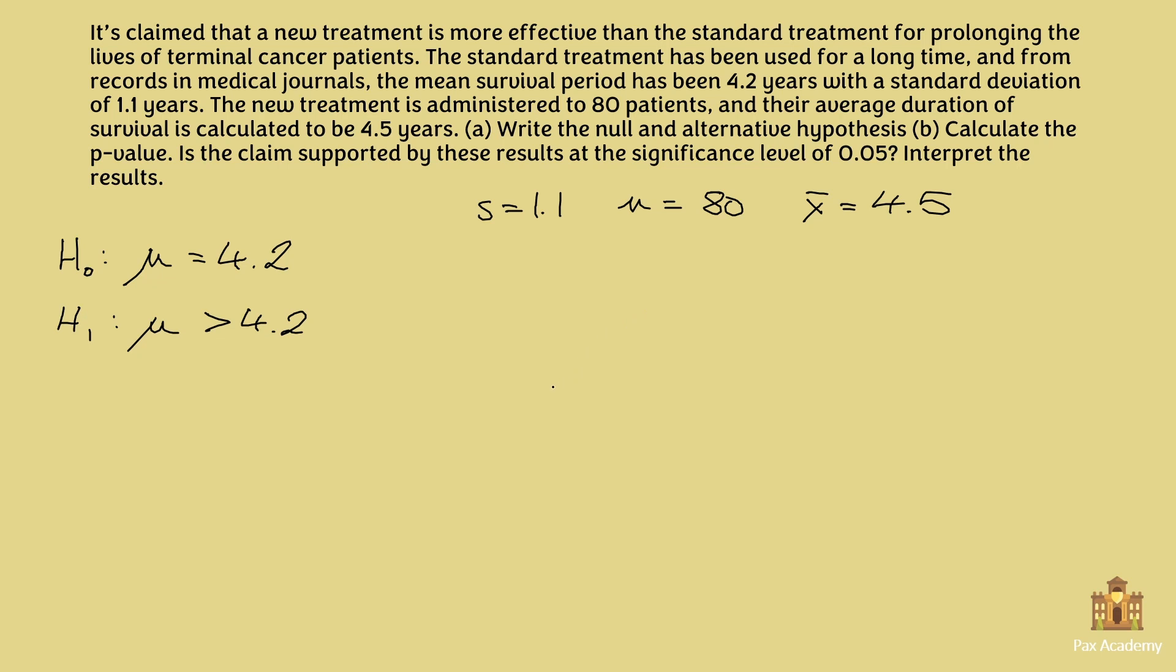And there's another question as well. Is this a one tail test or a two tail test? This is indeed a one tail test because the alternative hypothesis says it's higher. And therefore the shaded area is going to be on the right hand side. Now using the p-value method, this area here is now going to be the p-value. So this is what we need to find out.